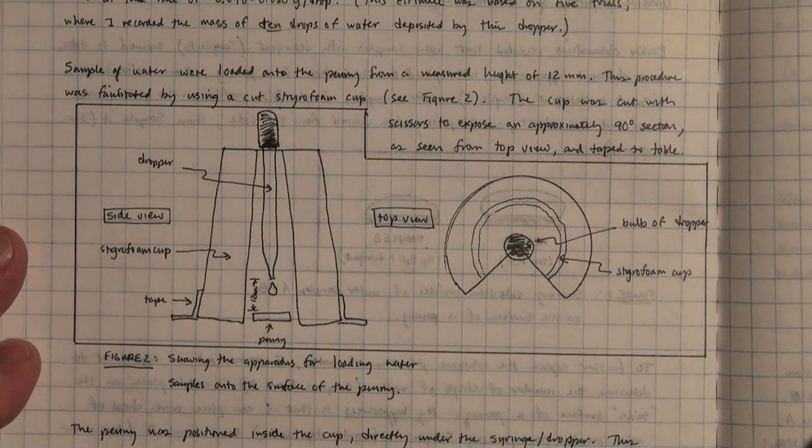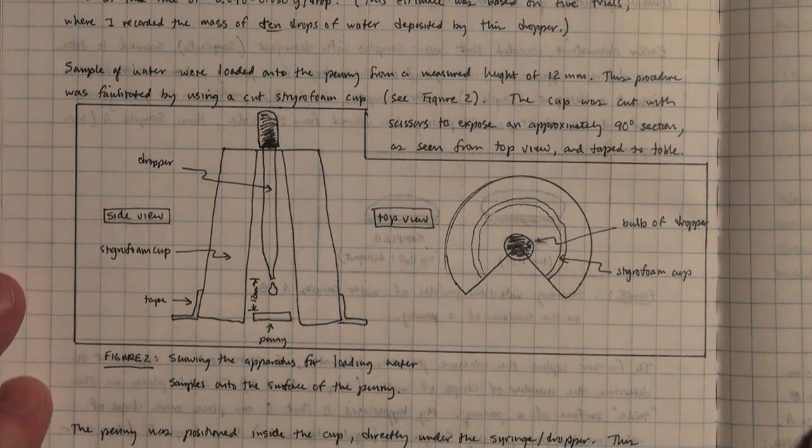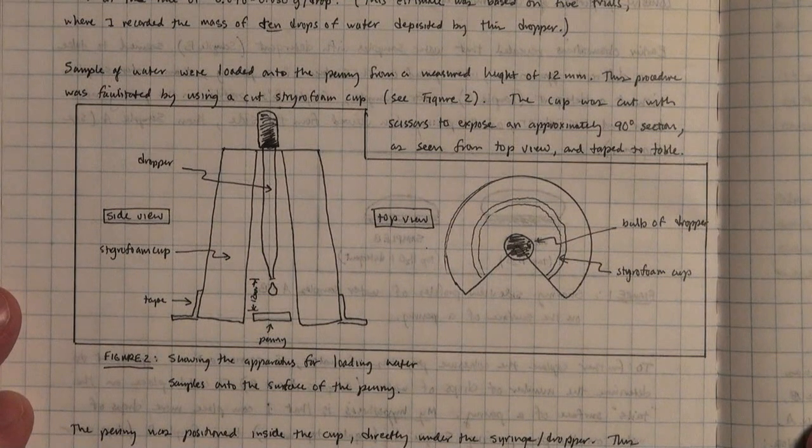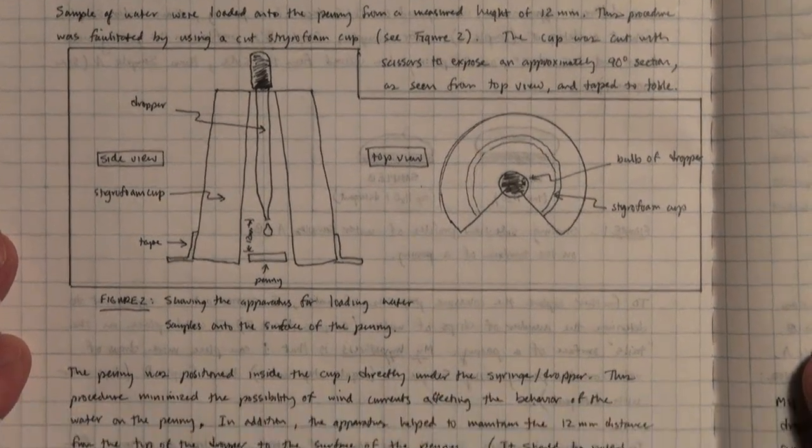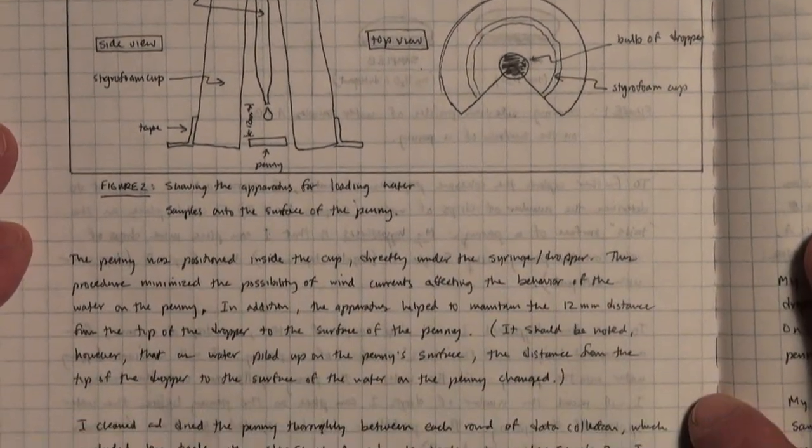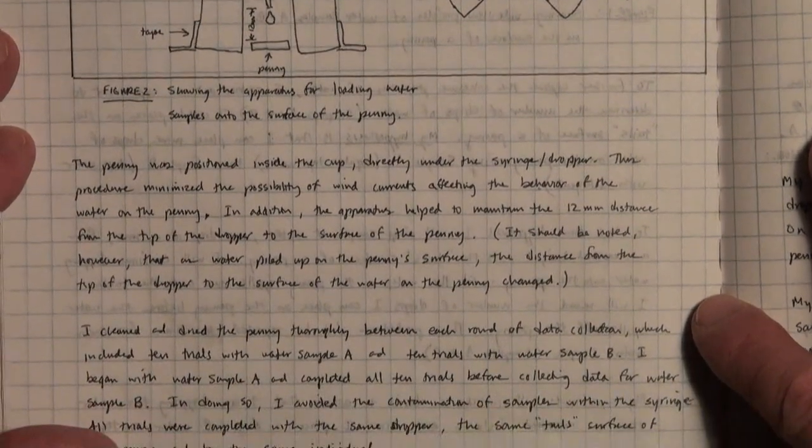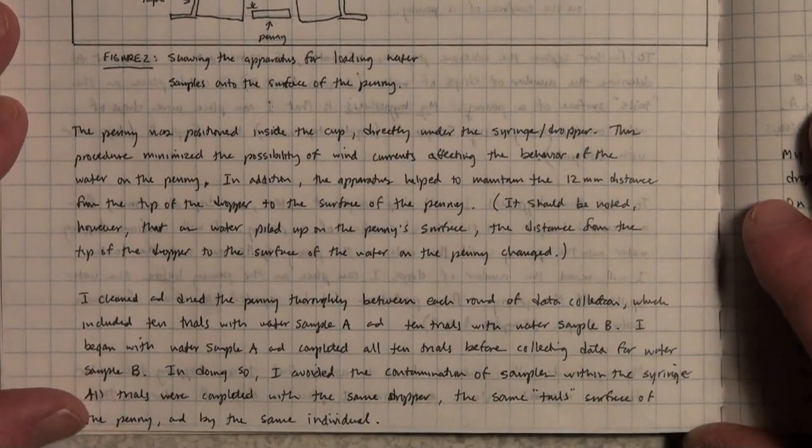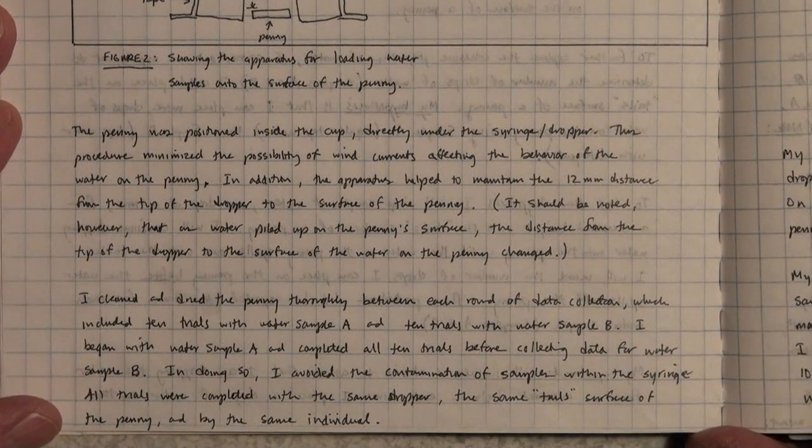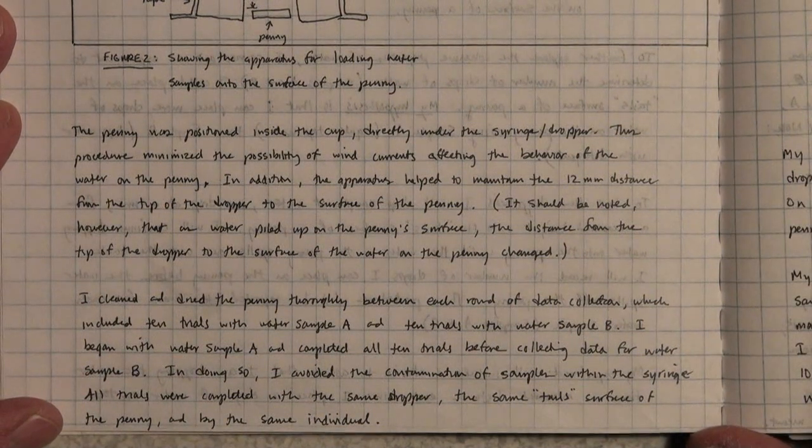It's important to show the apparatus. The penny was positioned inside the cup directly under the syringe or dropper, and this procedure minimized the possibility of wind currents affecting the behavior of the water on the penny.